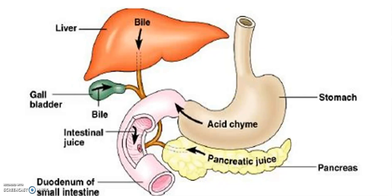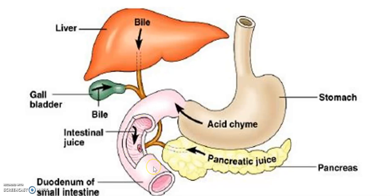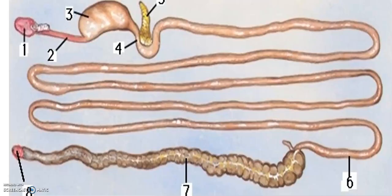To recap: the food comes from the buccal cavity through the esophagus into the stomach, where mechanical churning and chemical breakdown of proteins take place. Then the food goes into the small intestine, where bile secreted by the liver and stored in the gallbladder comes into the duodenum for digestion of fats. Along with that, pancreatic juice is secreted into the duodenum to break down complex carbohydrates, fats and proteins into their simpler parts.